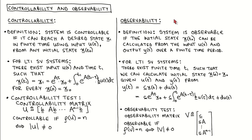Let's now move on to the concept of observability. If we want to design an observer, which is another part of the state variable compensator, the plant must be observable. The system is observable if we can calculate the value of the initial state from knowledge of the input and the output over a finite time period. Informally, this means that we can reconstruct the states of a system using only the input and output of the system.